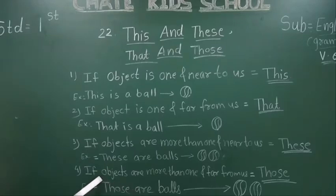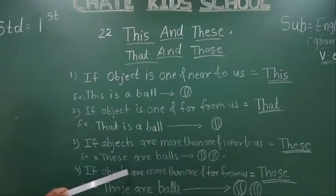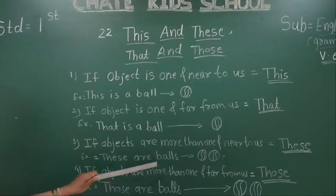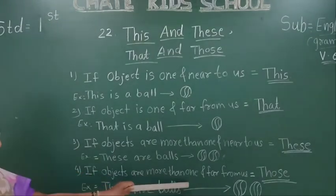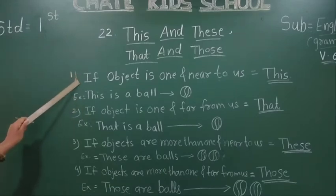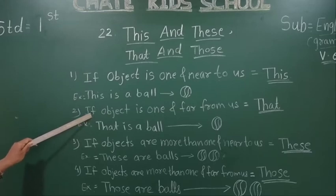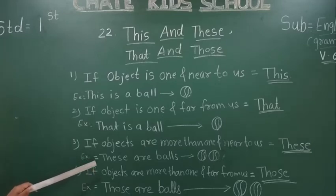If objects are more than one and far from us, we use 'Those' — T-H-O-S-E. For example: Those are balls. The distance is far from us, so we use 'Those'. Summary: single object near us — This; single object far from us — That; more than one object near us — These; more than one object far from us — Those.